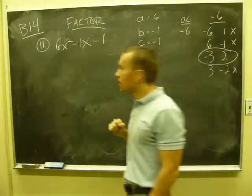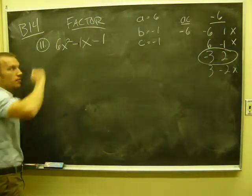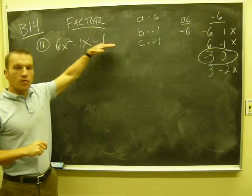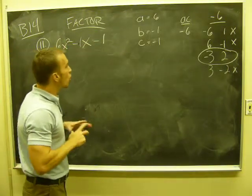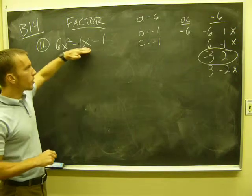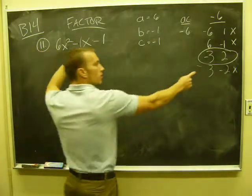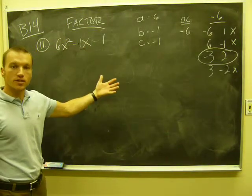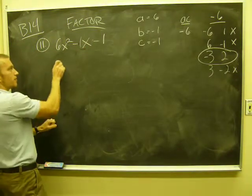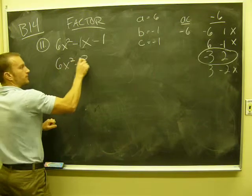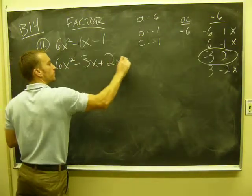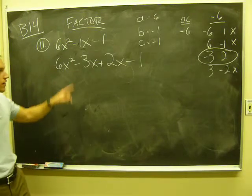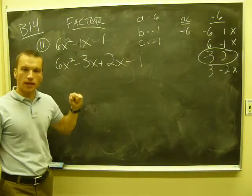Okay, so once I've found my two numbers, I come back over here and rewrite my quadratic expression. Three terms to start off with. The whole process here, or the goal, is to rewrite as four terms. That is to break up your x term using these two numbers. All right, so instead of negative 1x, I want to write negative 3x plus 2x. So that's the next step.